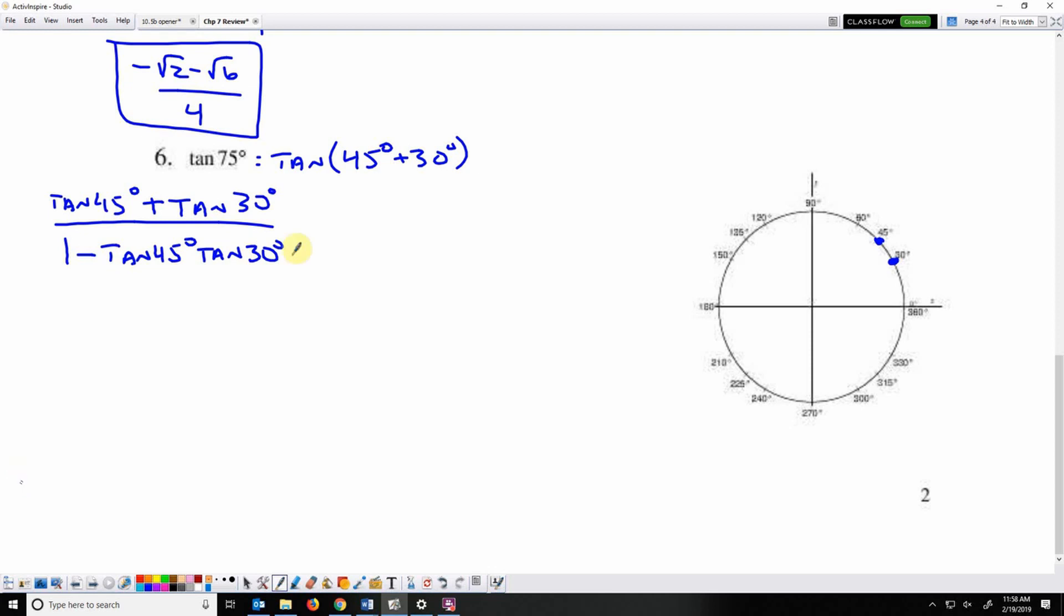Tangent 45 times tangent 30. So tangent is y over x. At 45 degrees, second position up, the y value is root 2 over 2, and the x value, second position to the right, is root 2 over 2. The y value at 30, first position up is 1 over 2. The x value, third position right, root 3 over 2.